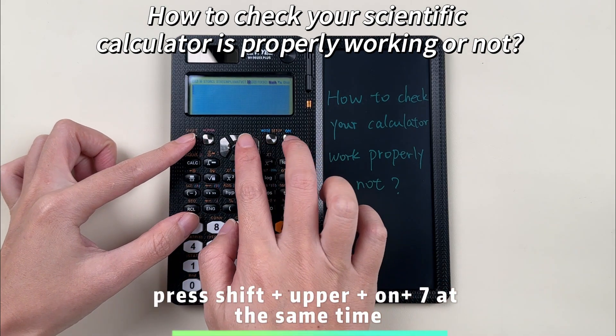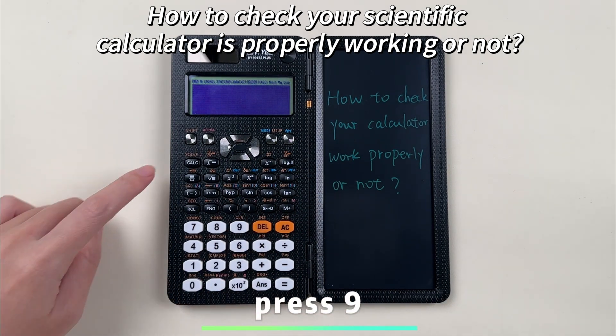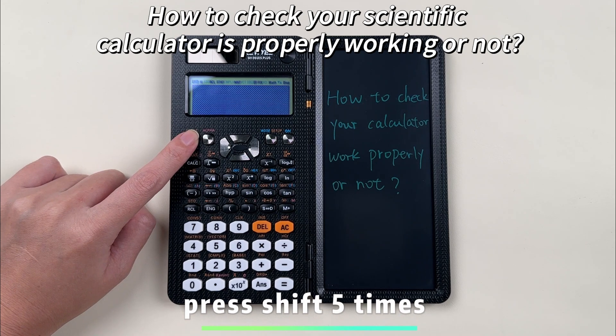Firstly, press shift, upper, and 7 at the same time. Then press 9, then you will see the dark screen, and press shift 5 times.